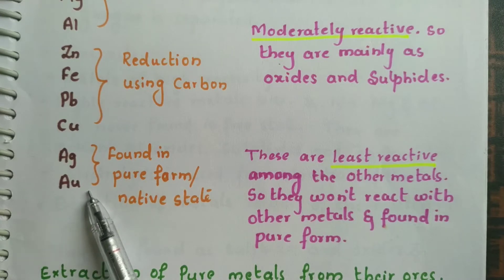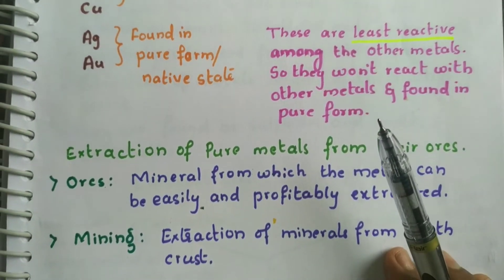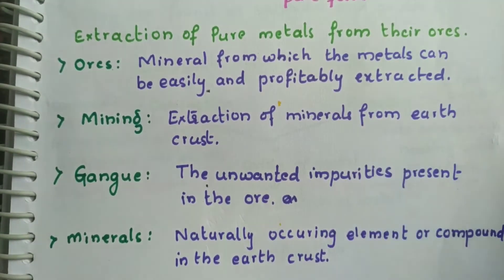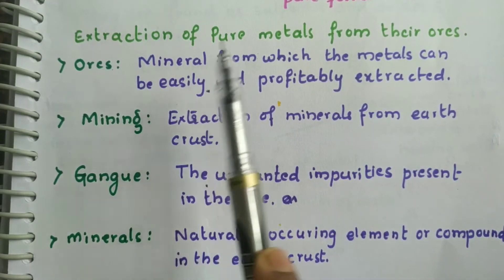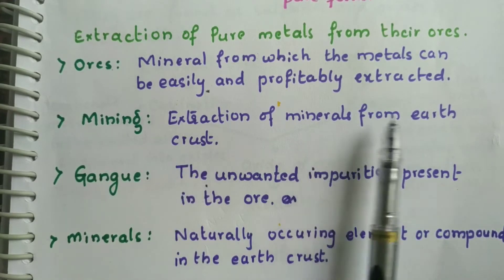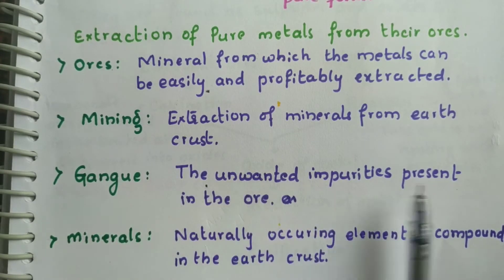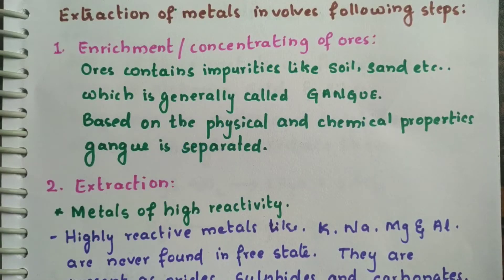Before going to extraction of metals, let us learn a few terminologies. Ores are minerals from which metals can be easily and profitably extracted. Mining is the extraction of minerals from the earth's crust. Gangue refers to the unwanted impurities present in the ore. Minerals are naturally occurring elements or compounds in the earth's crust.